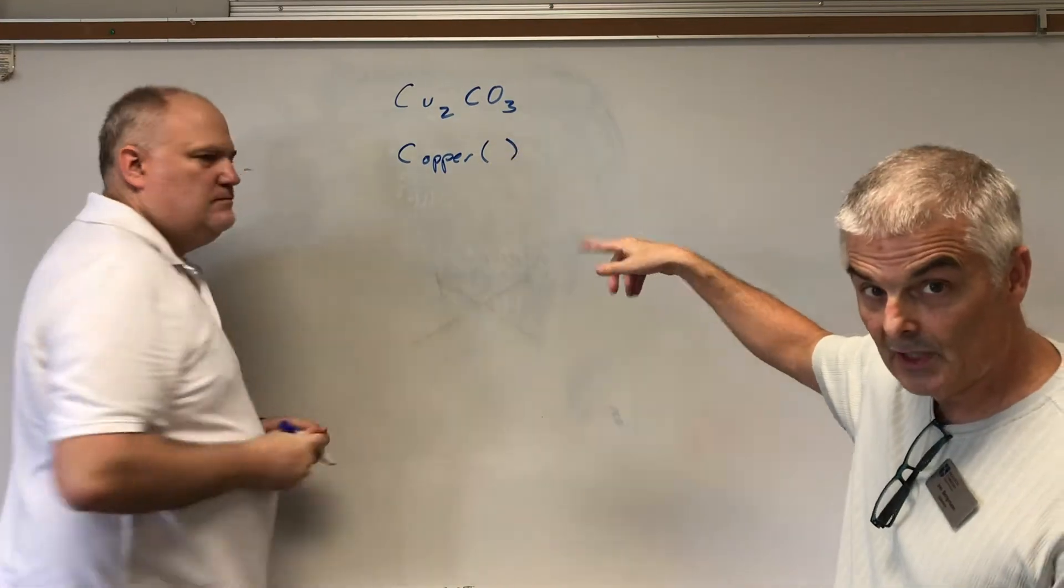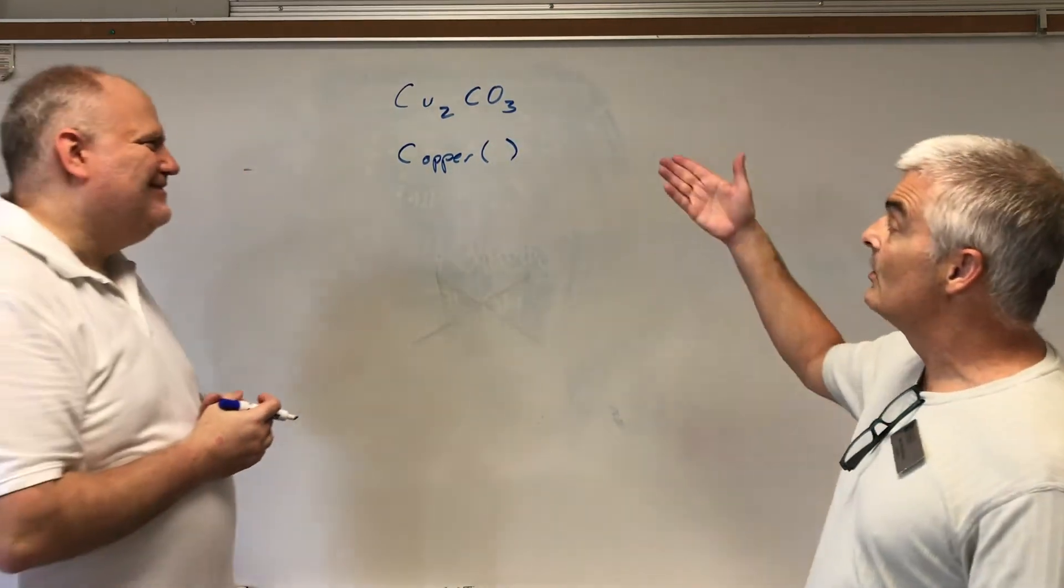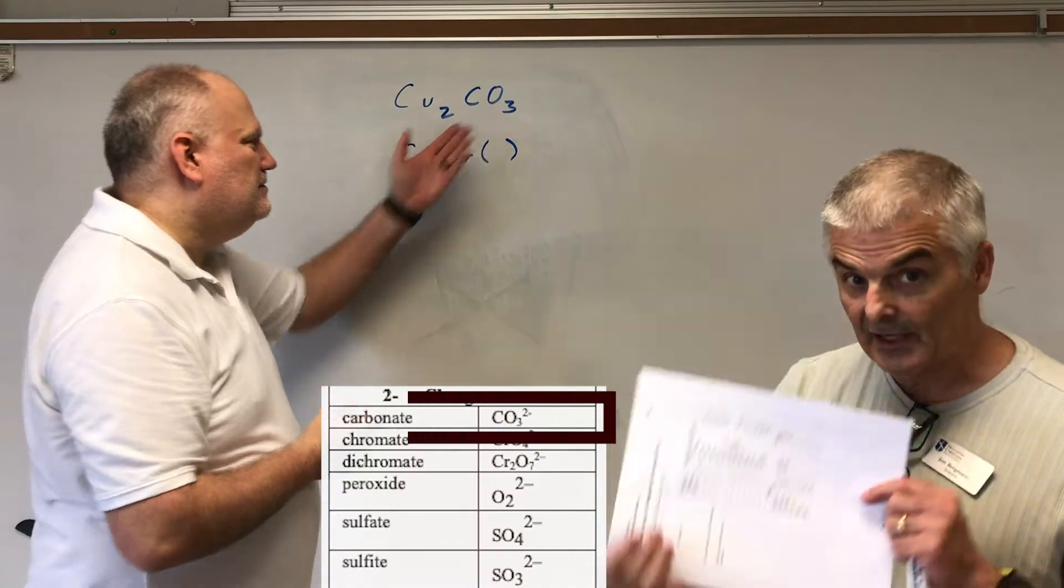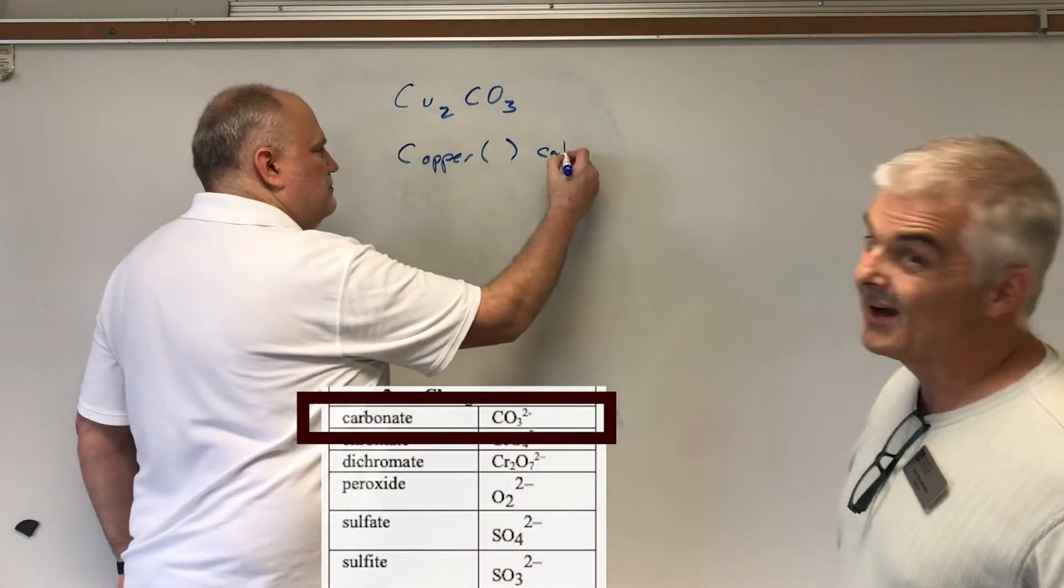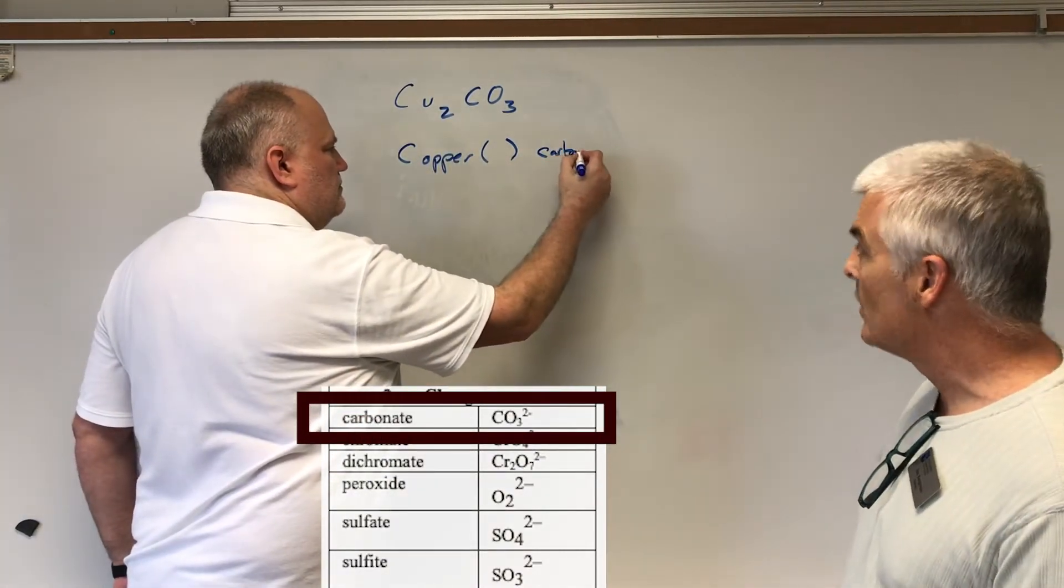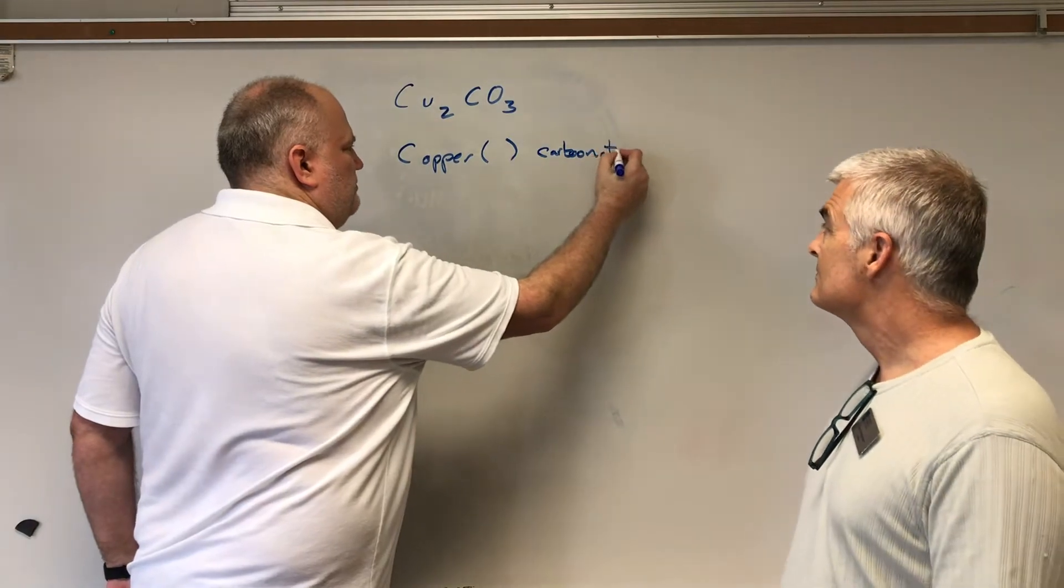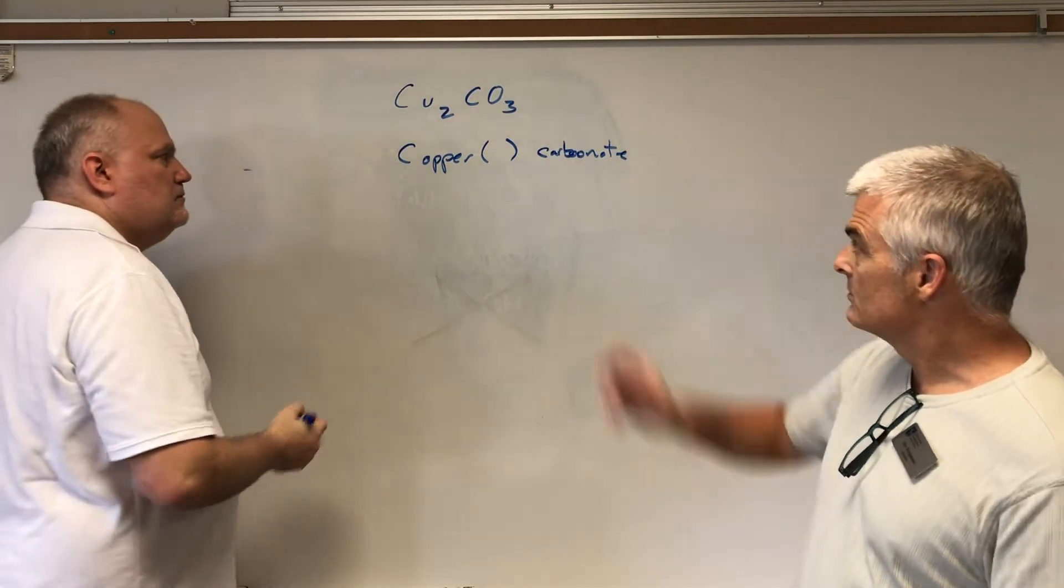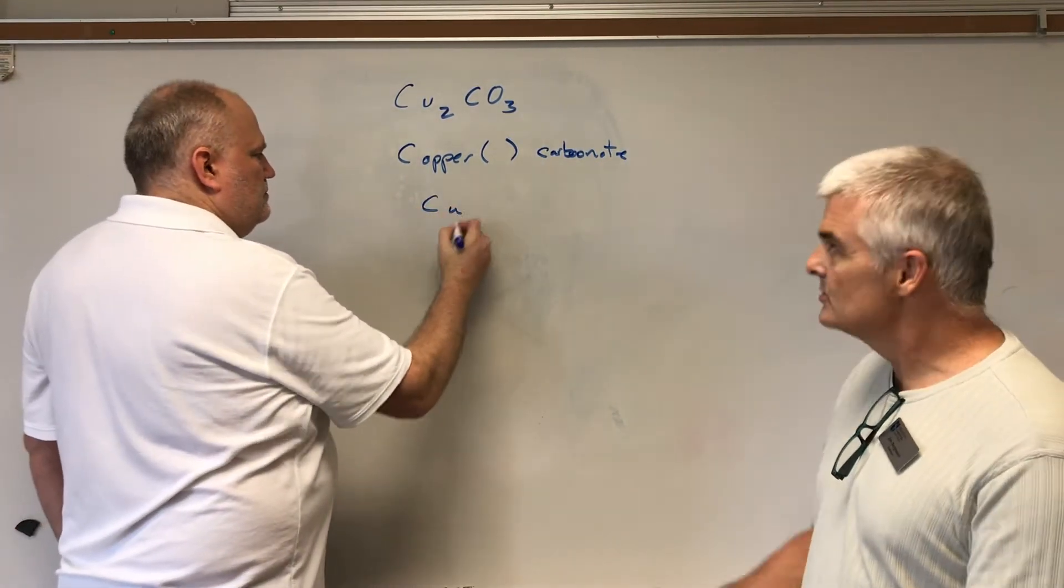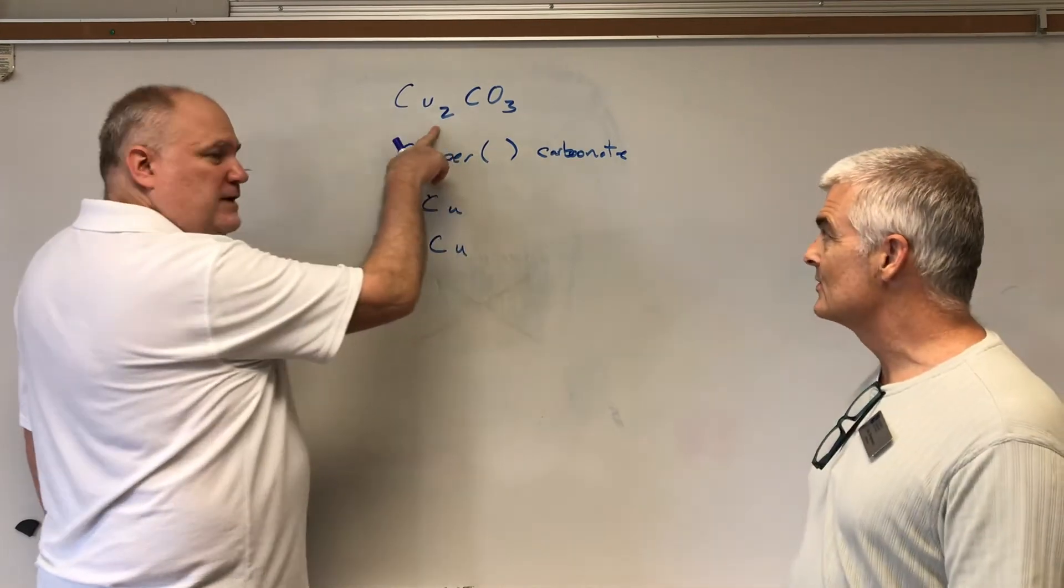So we're going to put the Roman numeral in brackets. Now the last name is easy again - get the table out - carbonate. Now we have to write out our quantities. Carbonate. So let's write Cu, Cu - we have two of these, there's two coppers, and then we have one CO3.